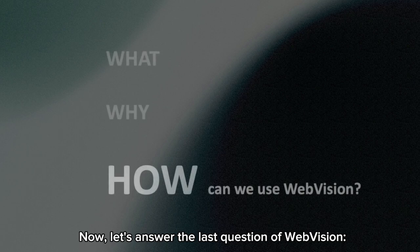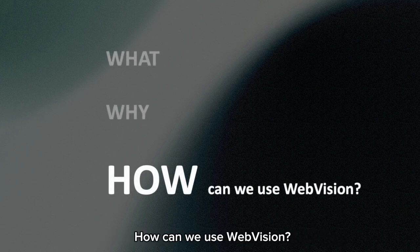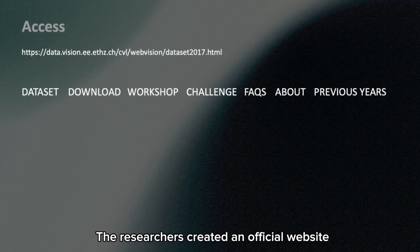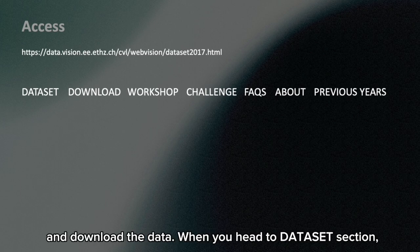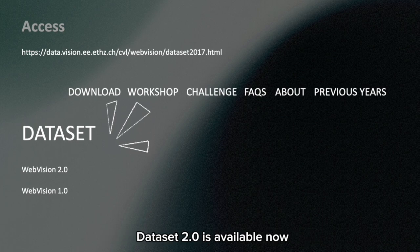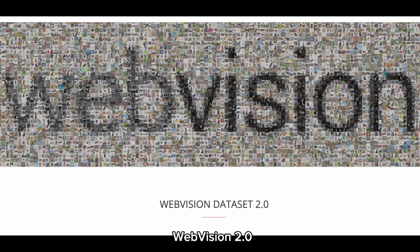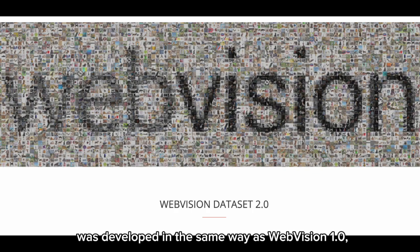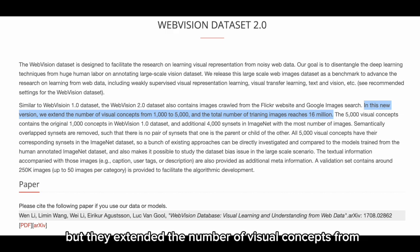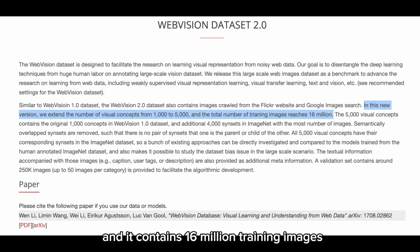Now let's answer the last question: how can we use WebVision? Accessing WebVision is straightforward. The researchers created an official website for WebVision, and everyone can directly visit the website and download the data. In the dataset section, you will find that WebVision 2.0 is now available as well. WebVision 2.0 was developed in the same way as WebVision 1.0, but extends the number of visual concepts from 1,000 to 5,000, and contains 16 million training images.